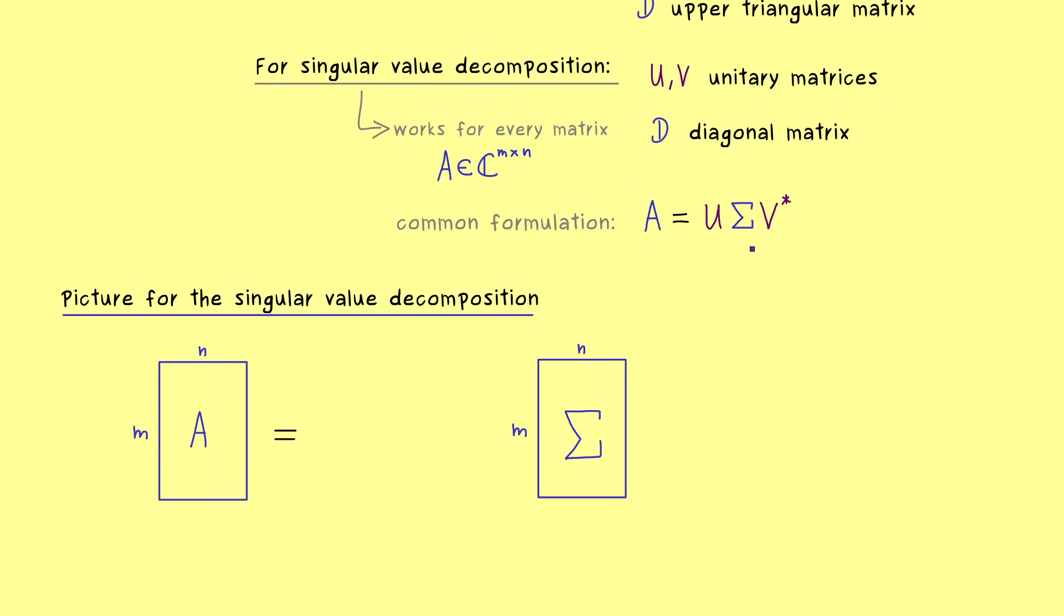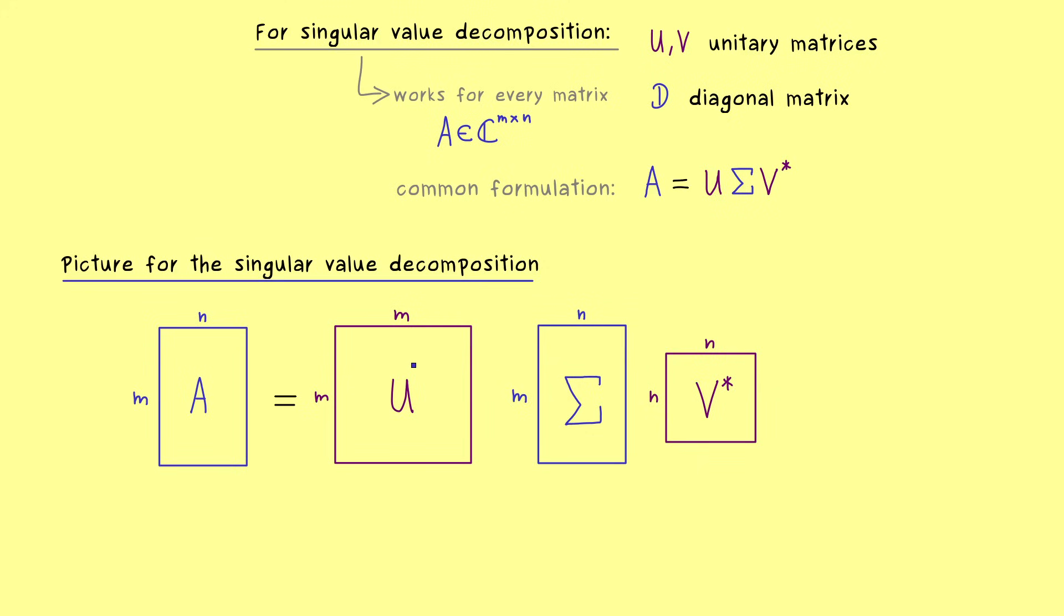And now to get the equality, we have to put in square matrices. So we have a square matrix U of size m times m and a square matrix V star of size n times n. So with that, the matrix multiplication definitely works, but it also means that there is no connection between U and V.